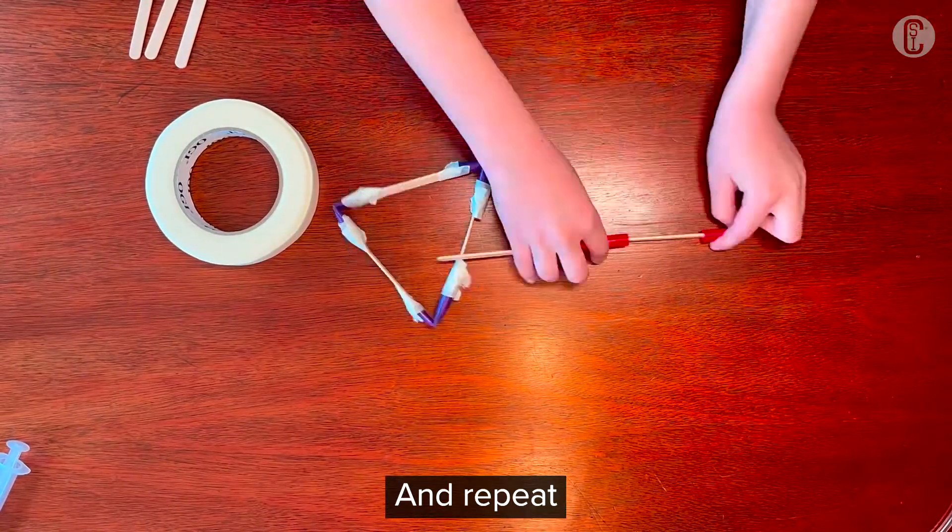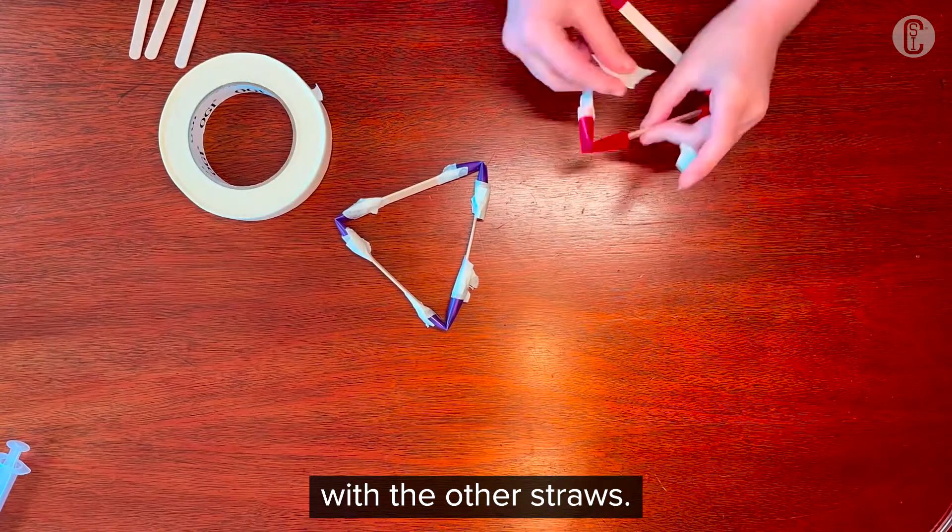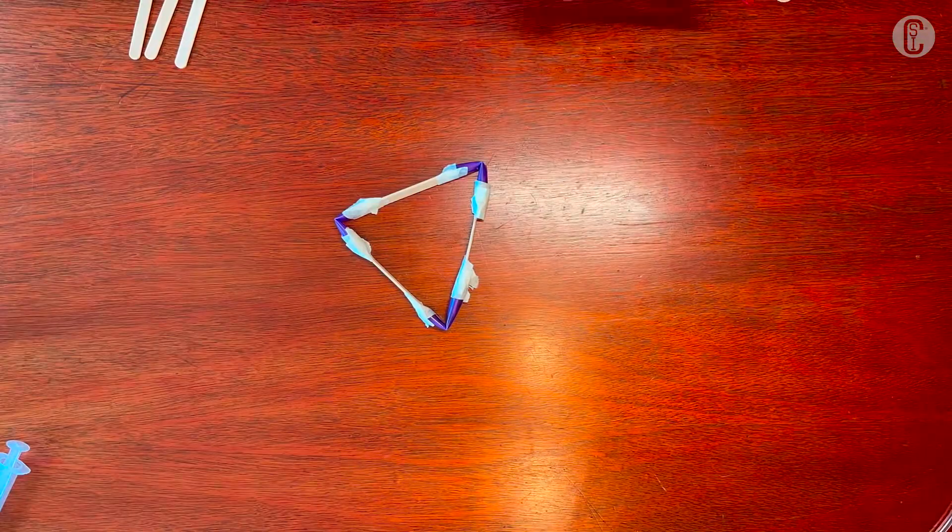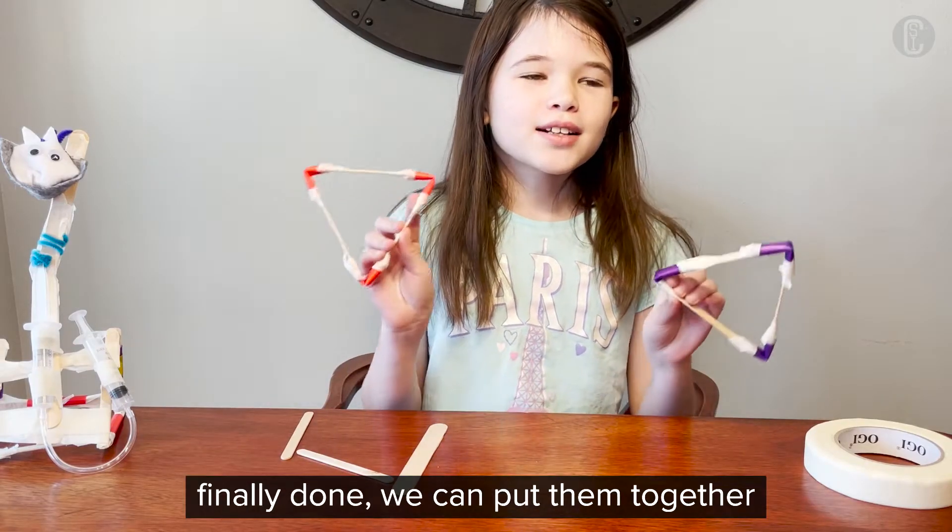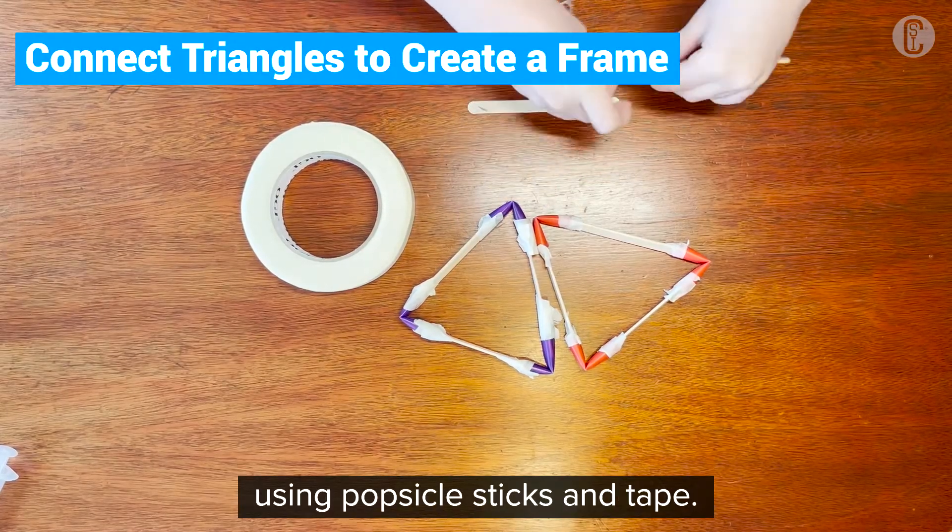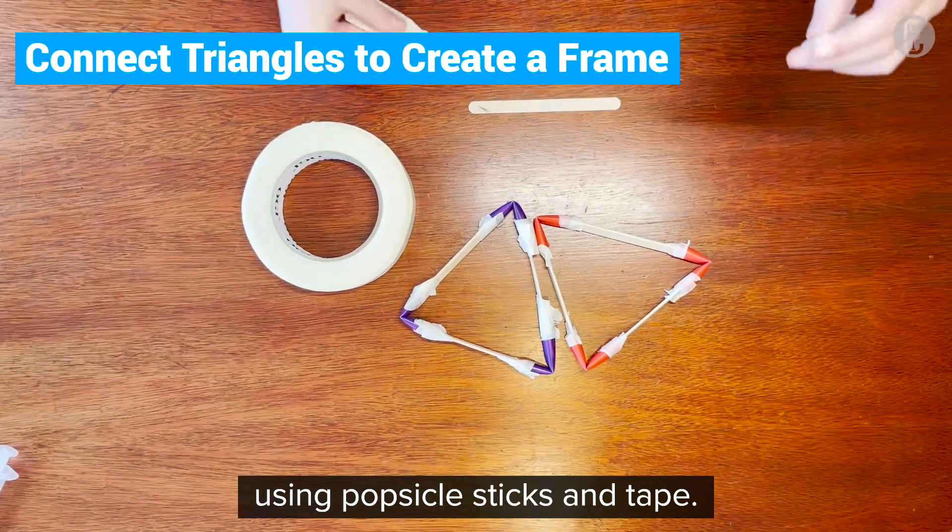And repeat with the other straws. Now that those triangles are finally done, we can put them together using popsicle sticks and tape.